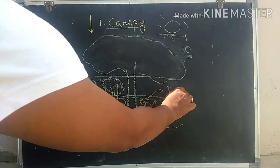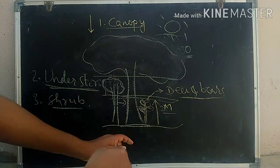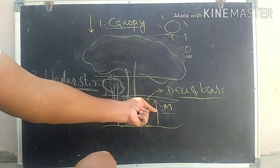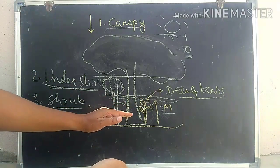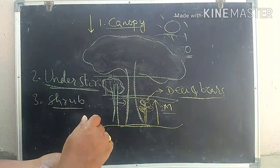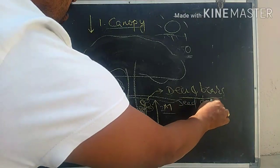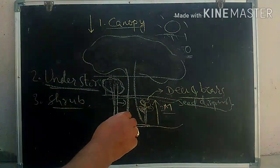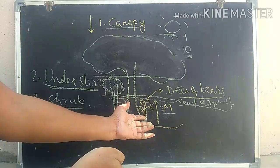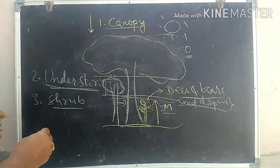The shrub layer contains shrubs, and these shrubs provide food for deer and bears, which obtain their food from shrubs that grow up to 2 meters in length. Due to less sunlight availability, they won't grow much. They also depend on animals for seed dispersal, which increases the number of plants in the forest.